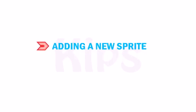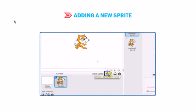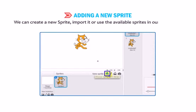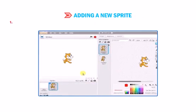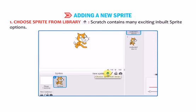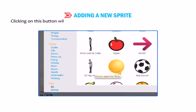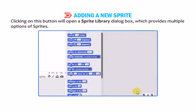Let us learn how to add a new sprite. When we open Scratch, by default the cat sprite is present on the stage. We can create a new sprite, import it, or use available sprites in our project by selecting the New Sprite option. The first option is Choose Sprite from Library — Scratch contains many exciting inbuilt sprite options. Clicking this button opens a Sprite Library dialog box, which provides multiple sprite options.